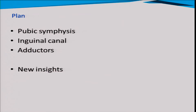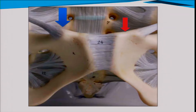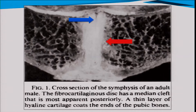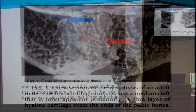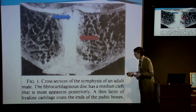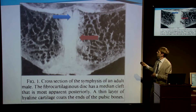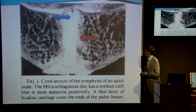We start with the pubic symphysis. We see here it's the joint at the anterior side of the pelvis between the two pubic bones. Around the pubic symphysis we have the pubic crest where the rectus inserts, and at the edge of the pubic crest the pubic tubercle where the inguinal ligament inserts. If we zoom in on the pubic symphysis — this is an axial specimen — we see here the anterior side and the posterior side. It's not a synovial joint.